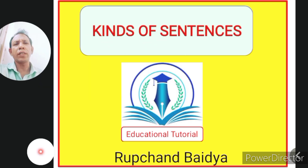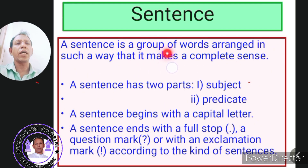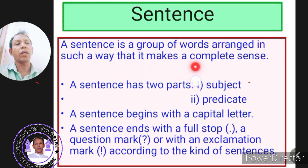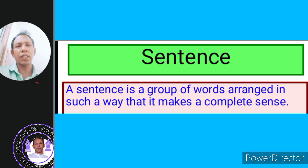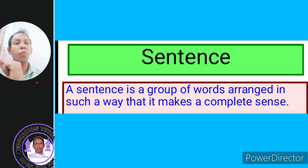Before we go to learn details about different kinds of sentences, let us learn what a sentence is. A sentence is a group of words arranged in such a way that it makes a complete sense. The words are arranged so that all together they bring out a complete sense, and this group of words is known as a sentence.